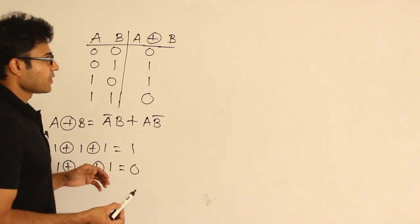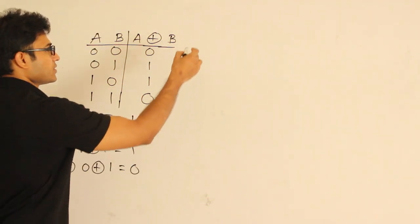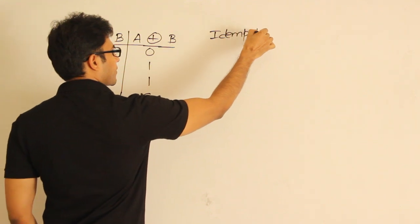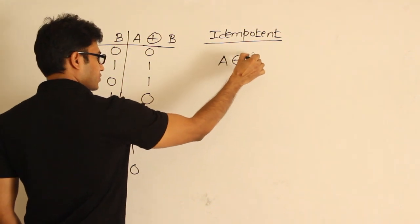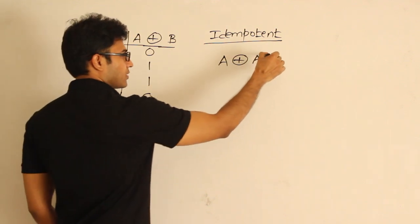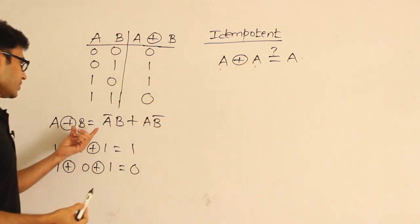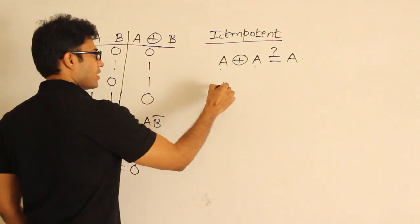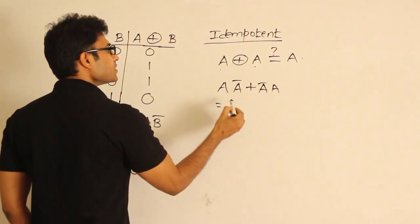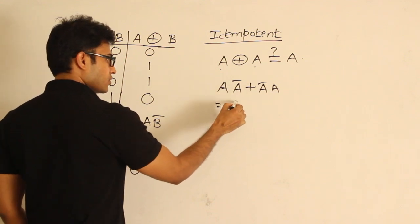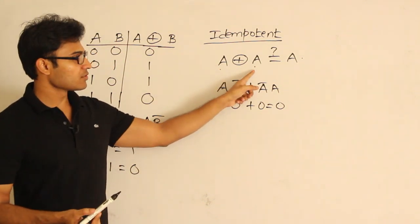So that is how it works. Now let us see whether the idempotency rule is followed or not. Idempotency means A XOR A should equal A. Using the formula, A XOR A is A·A' + A'·A. Both terms are 0, so the result is always 0 regardless of A's value. Therefore, XOR is not idempotent.